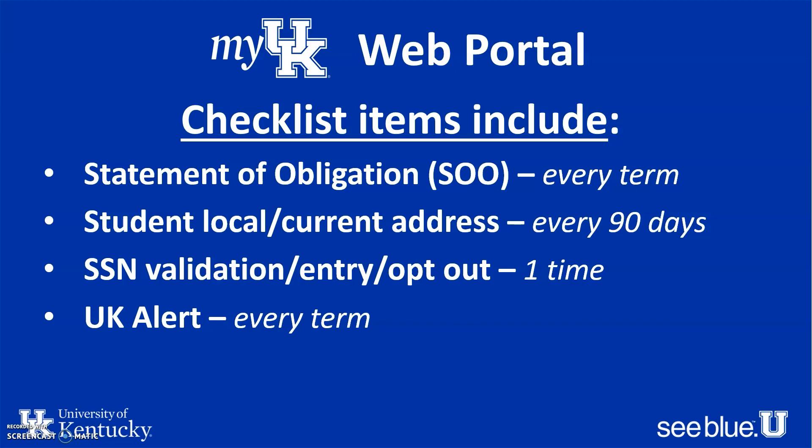When you're getting ready to schedule your spring semester classes, you'll need to sign the Statement of Obligation again, confirming that you comply with UK's policy guidelines, academic integrity, and academic honesty. You'll need to update your student local address every 90 days so we can keep in touch with you for safety purposes. If you are receiving any educational benefits, we need your social security number one time, which you can enter through My UK. You'll also need to update your preferences for the UK Alert system each term.